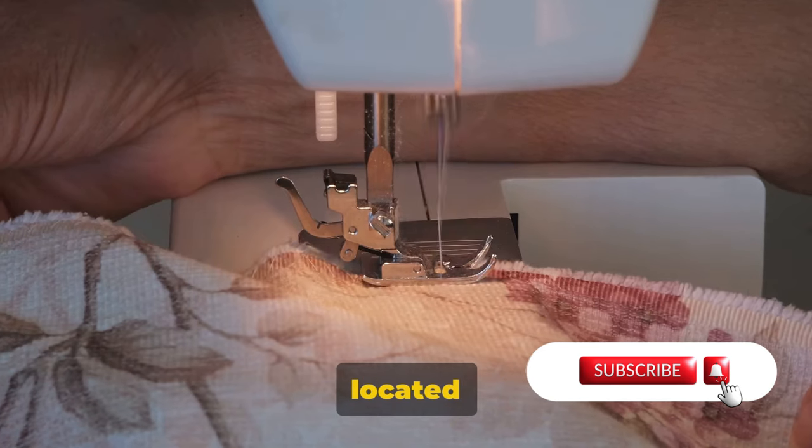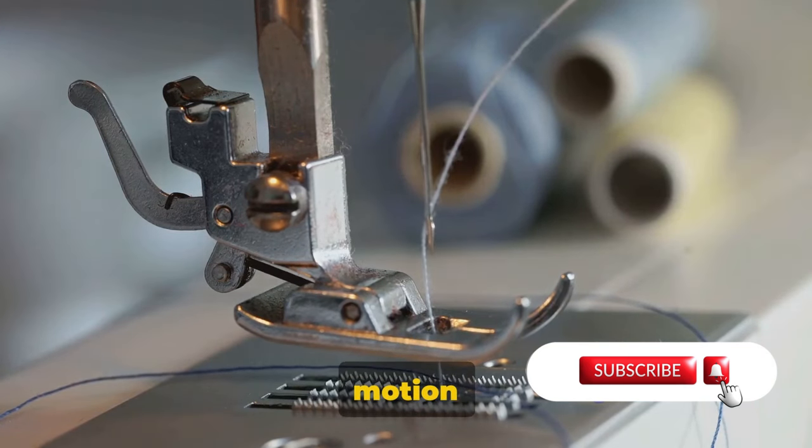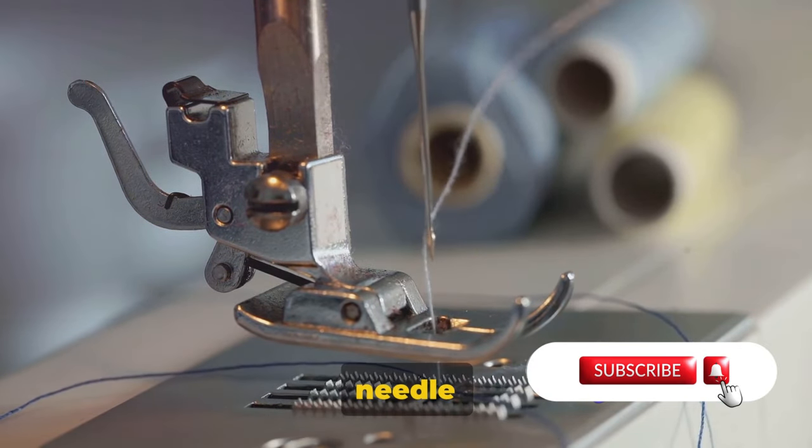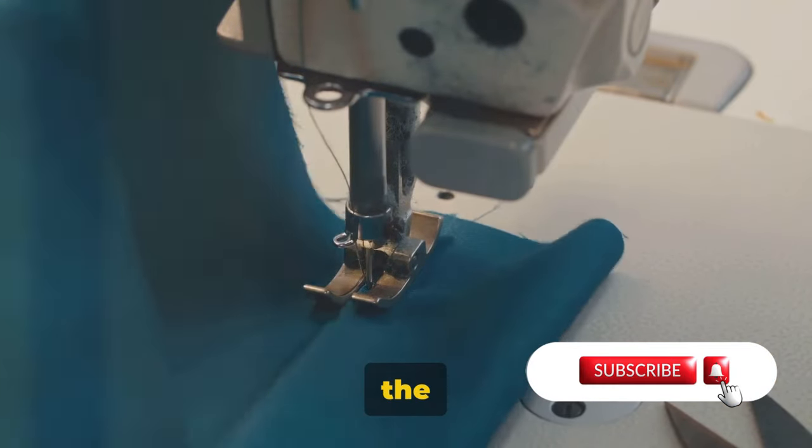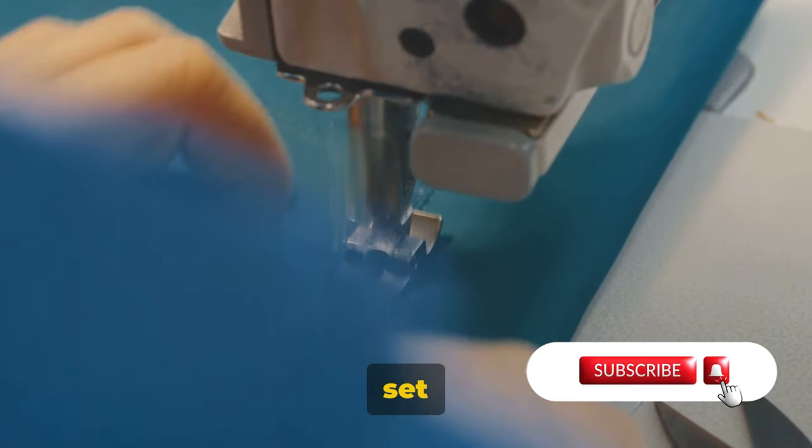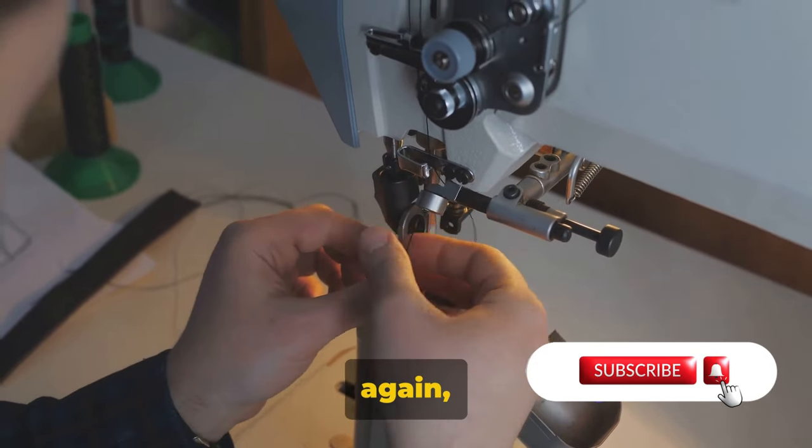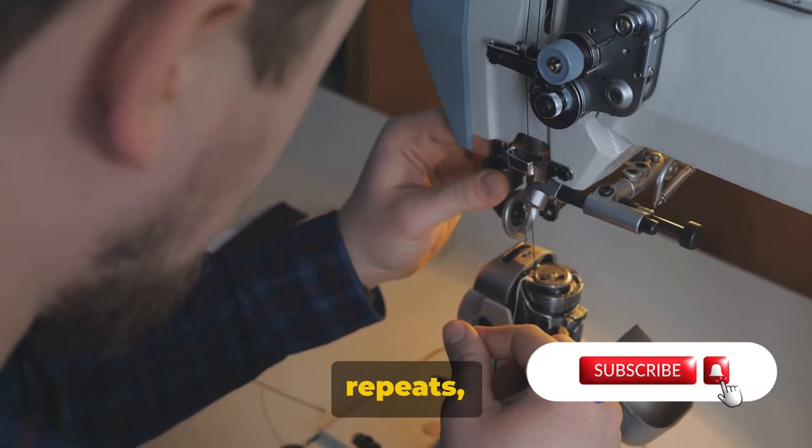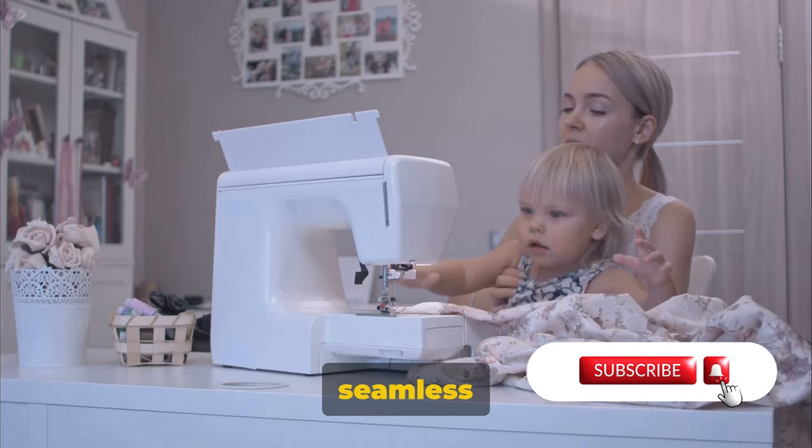This toothed metal bar, located beneath the needle and presser foot, moves back and forth in a motion that's synchronized flawlessly with the other parts of the machine. As the needle moves up after making a stitch, the feed dog rises and grips the fabric, nudging it forward by a set distance. Then, as the needle plunges down into the fabric again, the feed dog drops, releasing the fabric. This cycle repeats, giving us the continuous even movement of fabric we need for seamless sewing.